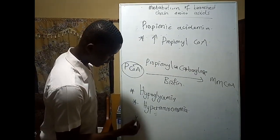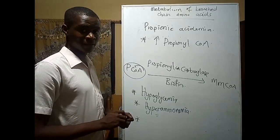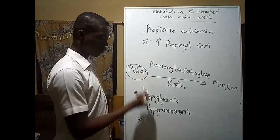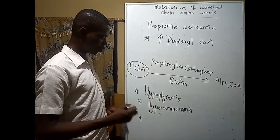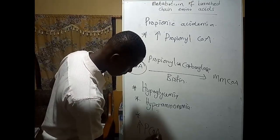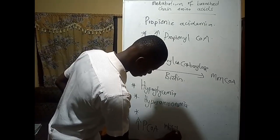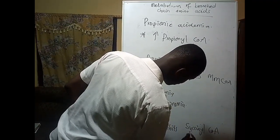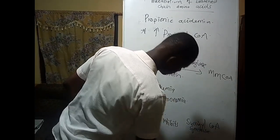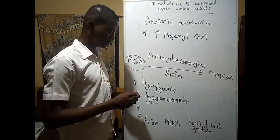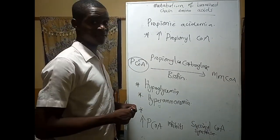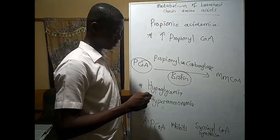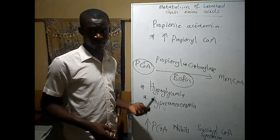Increasing propionyl-CoA will also inhibit succinyl-CoA synthase, an enzyme in the Krebs cycle. This is also an autosomal recessive disease. Management involves regulating the person's diet. If the cause is a lack of biotin, simply providing foods containing biotin can help the person recover.